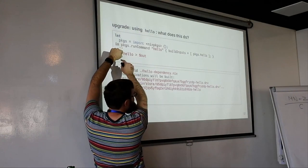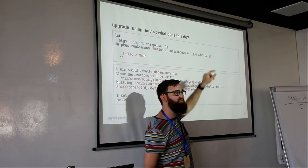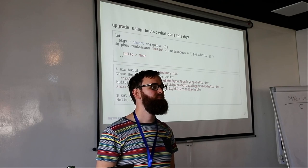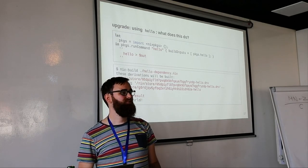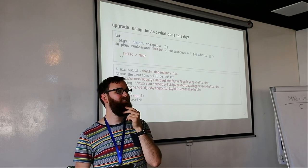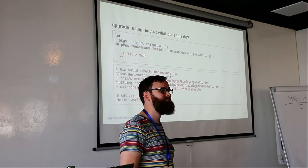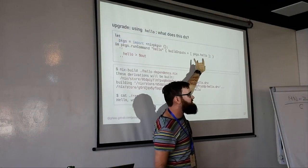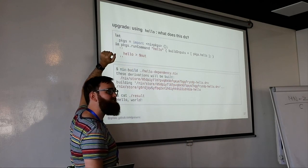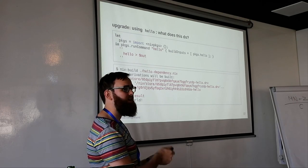Going back to the idea of interpolating hello directly: that would remove packages.hello from build inputs. But because of the string context we mentioned, Nix would know that this string depends on that store path. So when it executes the build, it will know it needs that path and put it into the sandbox. Q: What's the difference between buildInputs and nativeBuildInputs? That has to do with cross-compiling and is too advanced for this talk.